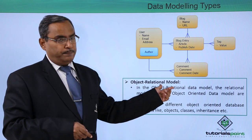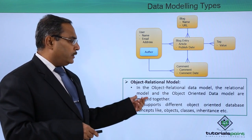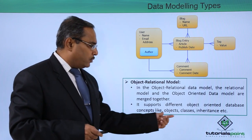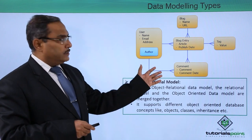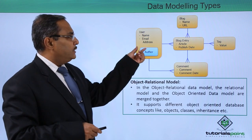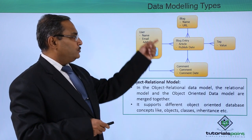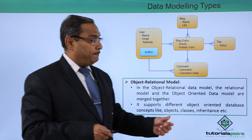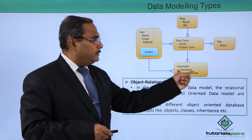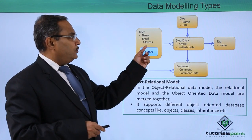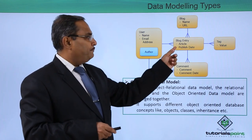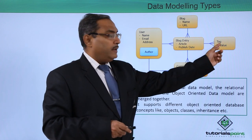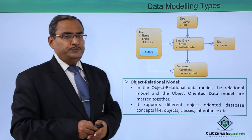The last one is the object relational model. In this model, the relational model and the object oriented data model have been merged together. It supports different object oriented database concepts like objects, classes, inheritance, etc. For example, a user has a name and email address, and has made multiple comments — a one-to-many relationship. A user also has multiple blog entries, each with a blog name and URL, and one blog entry may have multiple tag values.